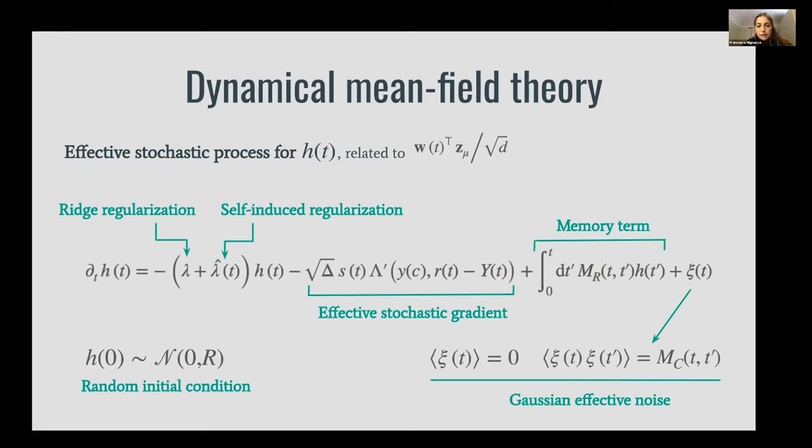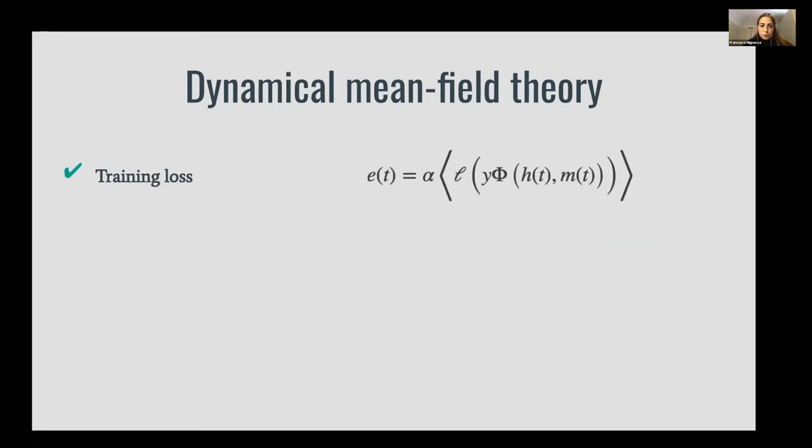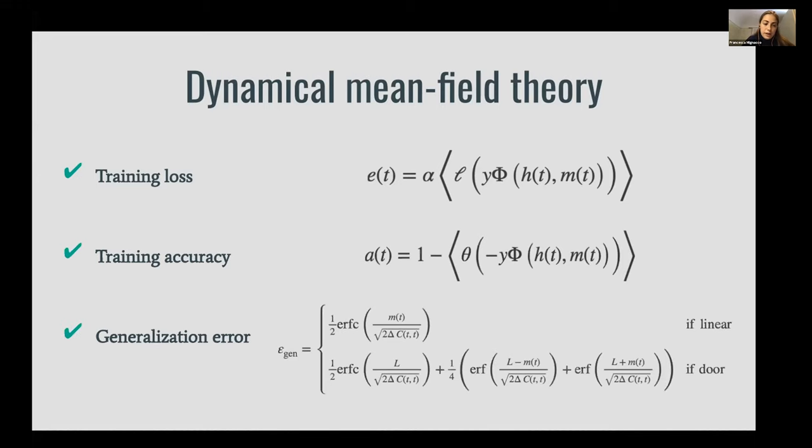In practice, the MFT allows us to characterize all the quantities that we use to define the performance in terms of these scalar variables h_t. So the training loss, the training accuracy, and the generalization error, which we define as the fraction of misclassified samples.